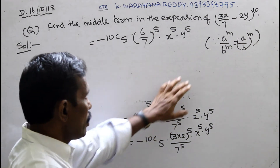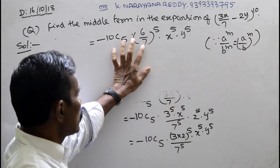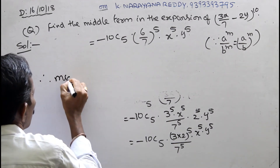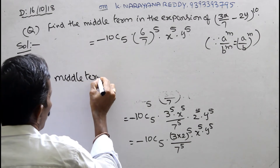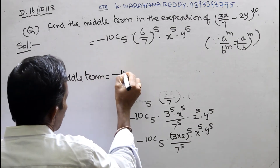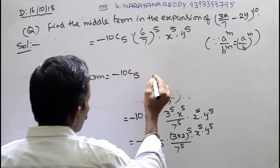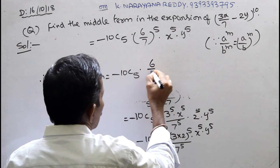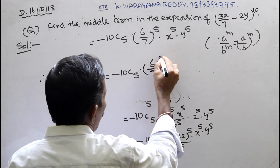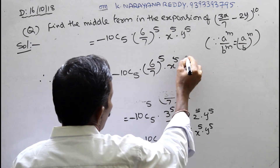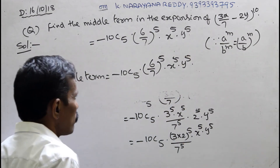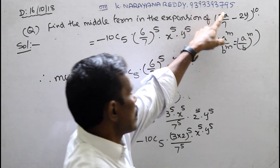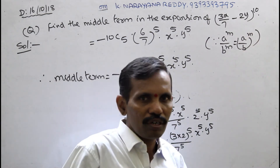Therefore, the middle term equals −10C5 · (6/7)^5 · x^5 · y^5. This is the required middle term of the expansion of (3x/7 − 2y)^10.